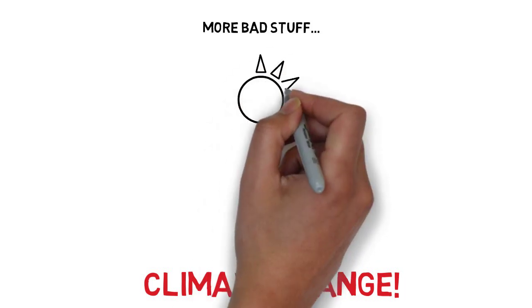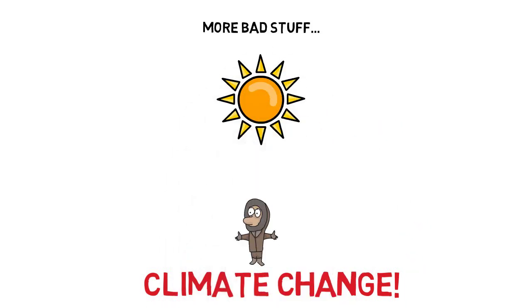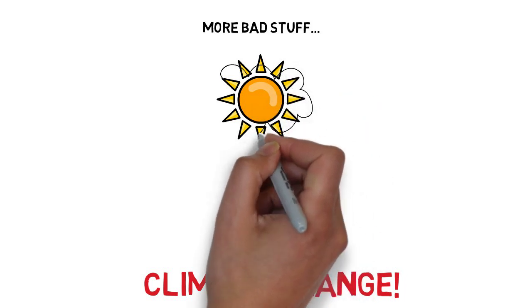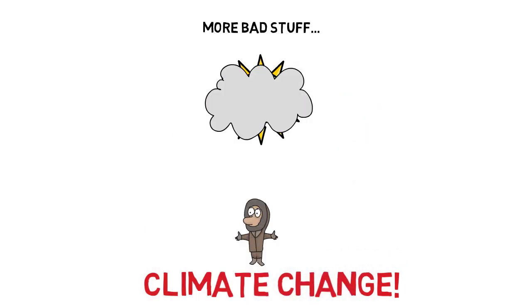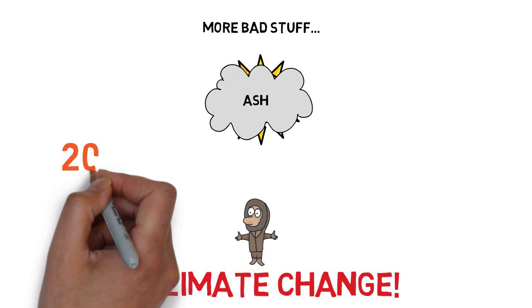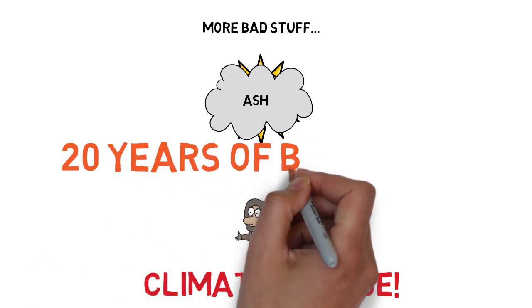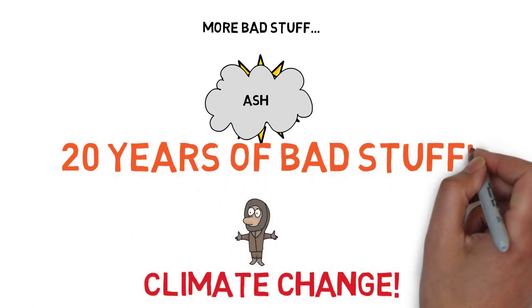This is because the thick layers of ash in the sky would block out the sunlight from reaching us. As you can imagine, it would be a long period of up to 20 years of darkness, coldness and mass deaths on a global scale.